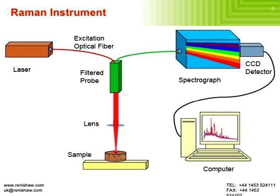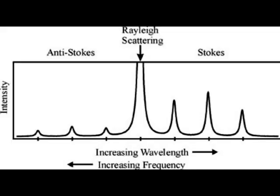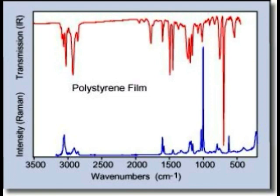How does Raman spectroscopy differ from FTIR, that is Fourier Transform Infrared Spectroscopy? There is one main difference: in Raman spectroscopy, if two molecules are the same, the peaks in the obtained graph will be high. But in FTIR, if the molecules are the same, the peaks will be very low. That is why both are called complementary to each other. As shown in the graph, the red line depicts FTIR and the blue line depicts Raman spectroscopy. Around 1000 cm⁻¹, the Raman spectroscopy graph has a very high peak, but the FTIR graph is very low, because at that point there may be similar molecules present.